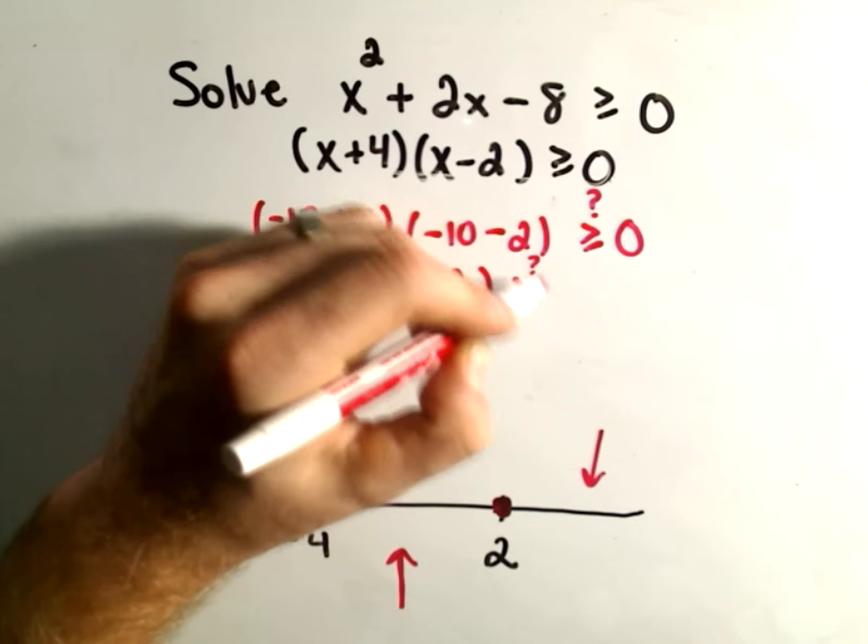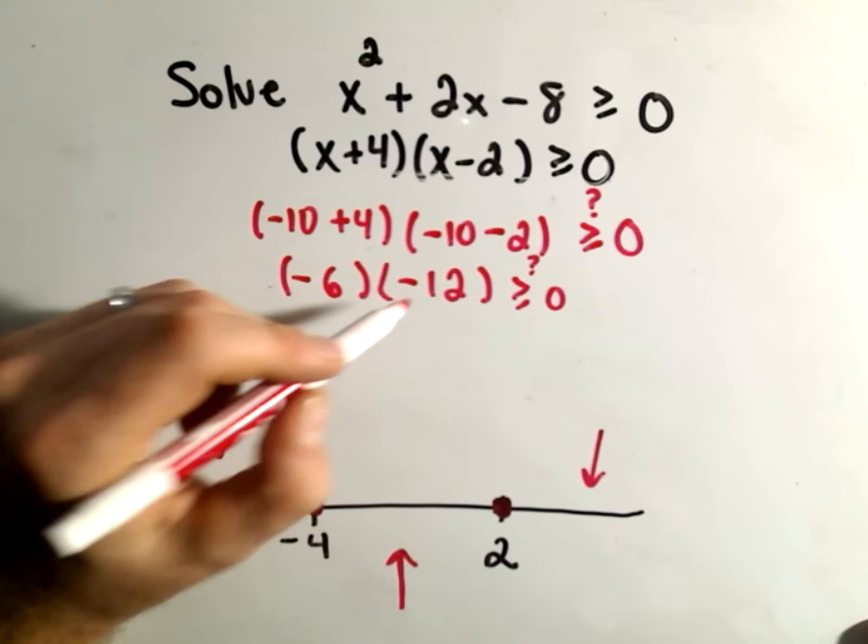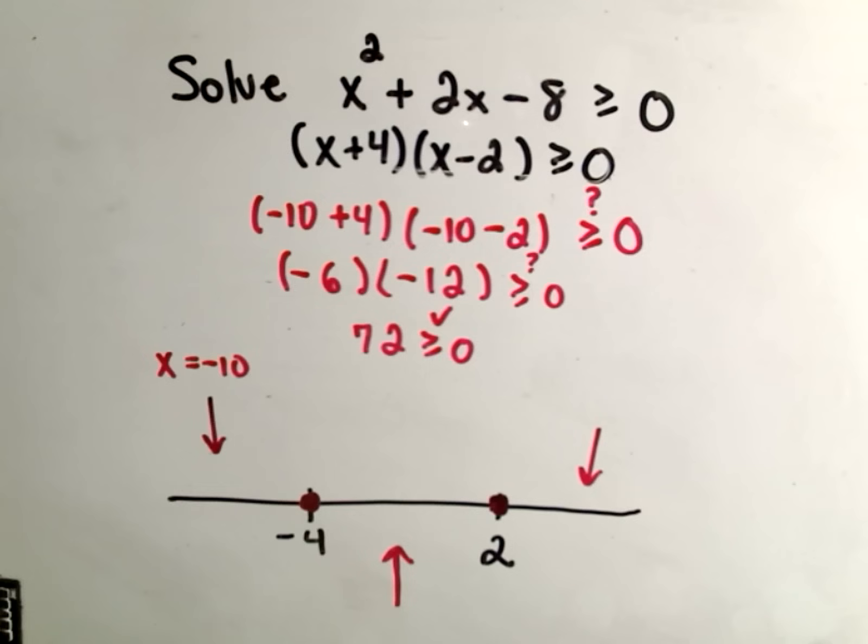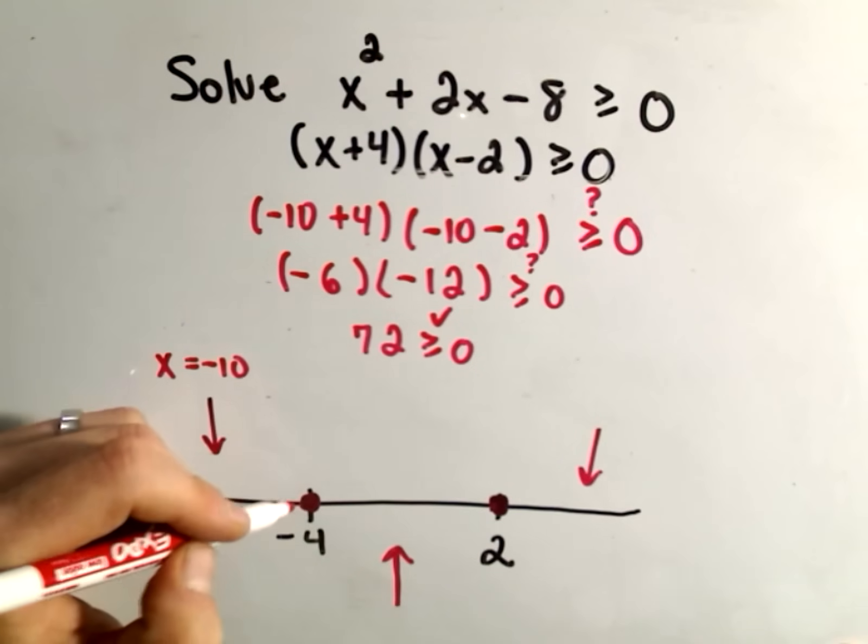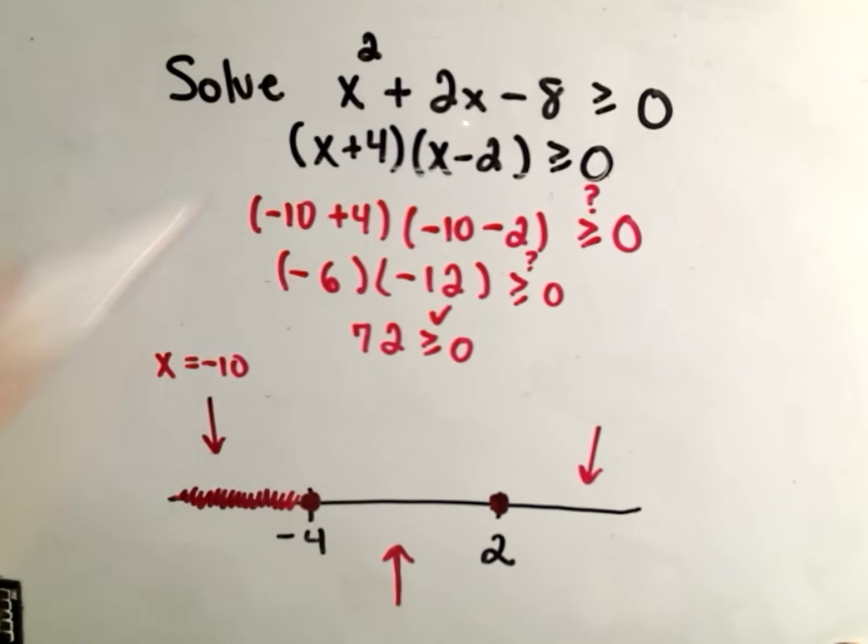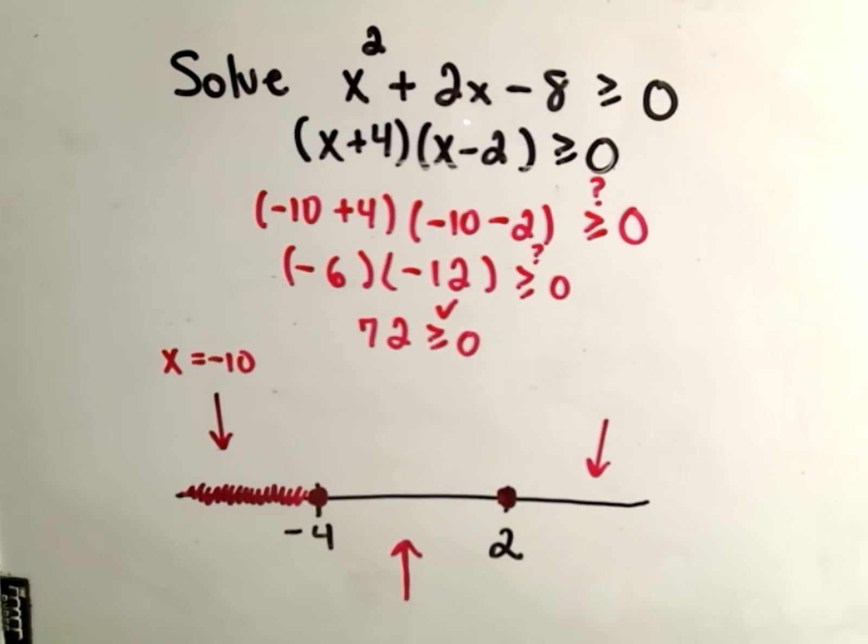Is that greater than or equal to 0? Well, a negative times a negative will get positive 72. Positive 72 is certainly greater than or equal to 0. So that means everything less than negative 4 will be a solution for our inequality. So that part certainly works.